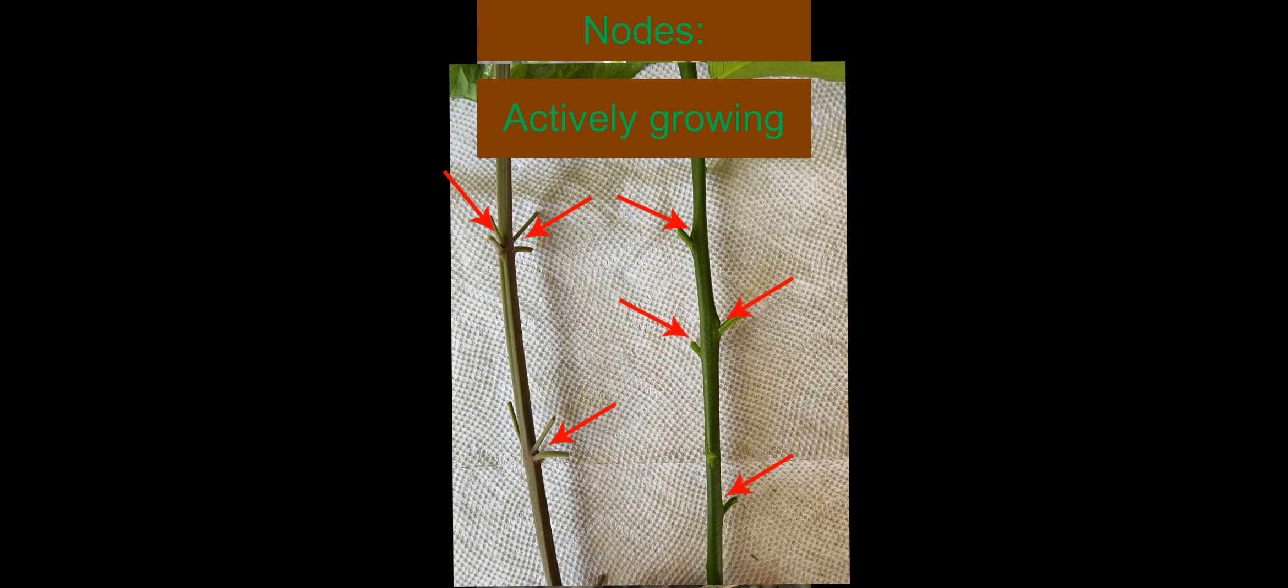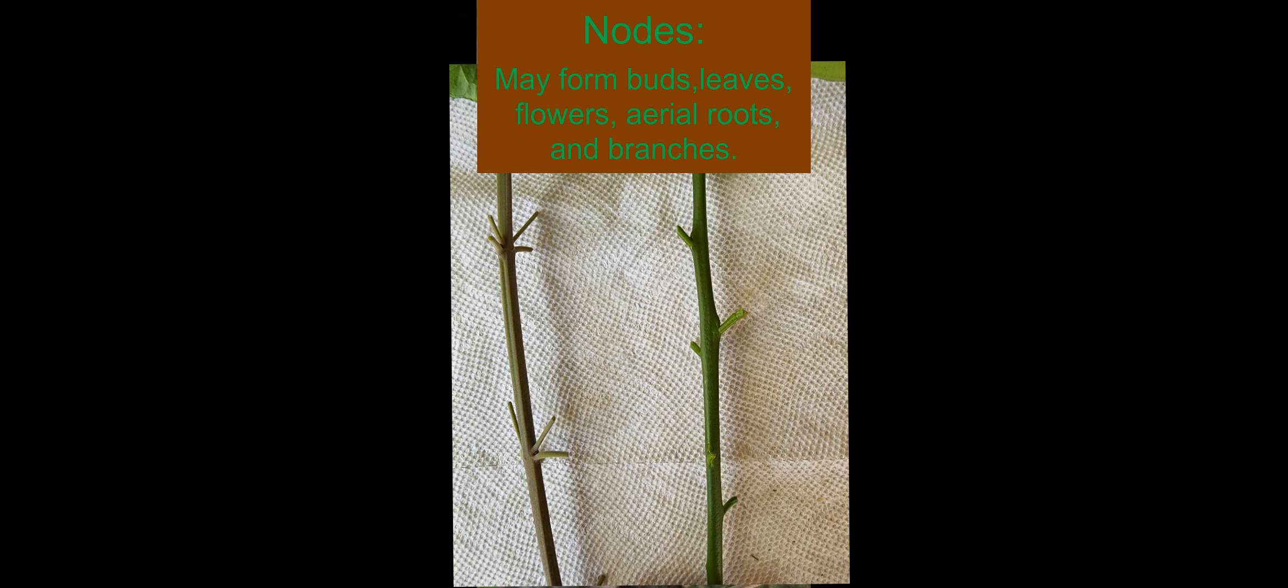Nodes are regions of actively growing tissue where buds, leaves, aerial roots, and branches originate from.